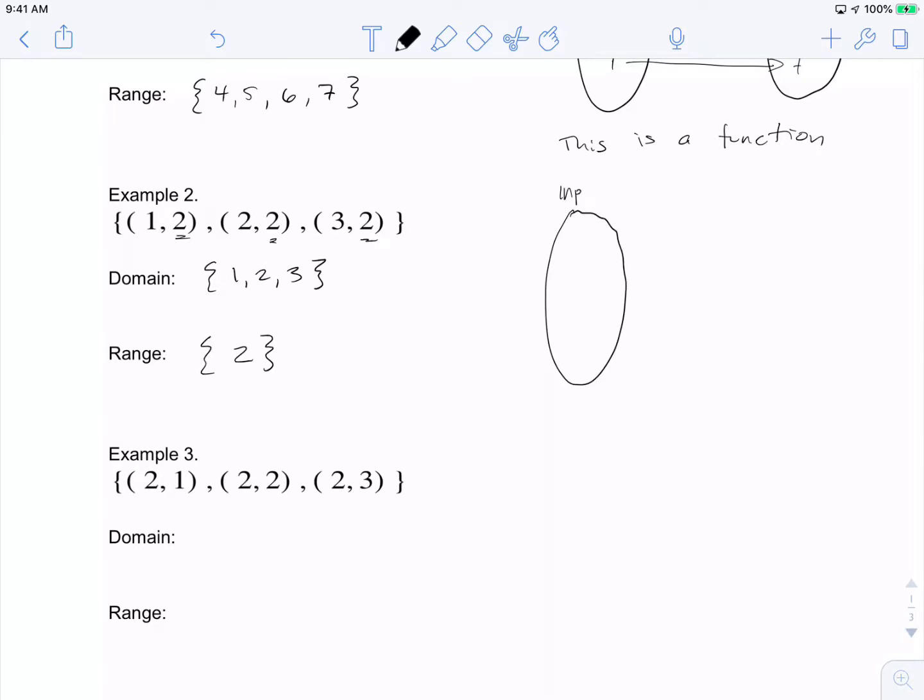The inputs are 1, 2, and 3, and the output is 2. We have 1 goes to 2, 2 goes to 2, and 3 goes to 2. Since each input goes to one value, namely 2, this is a function.